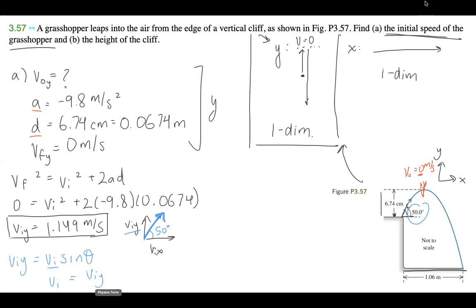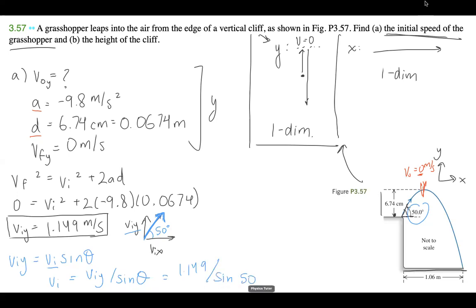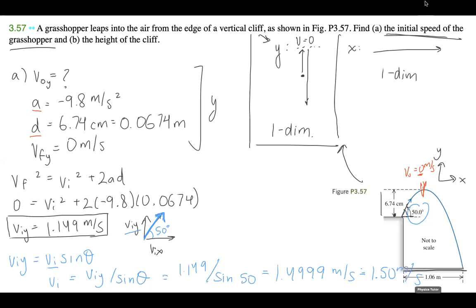So V-I equals V-I-Y divided by sine theta. Plugging in: 1.149 divided by sine of 50 degrees. The V-I value I'm getting is 1.4999 meters per second, or approximately 1.50 meters per second. So in the first part of the question, our final answer for the initial speed of the grasshopper is 1.50 meters per second.